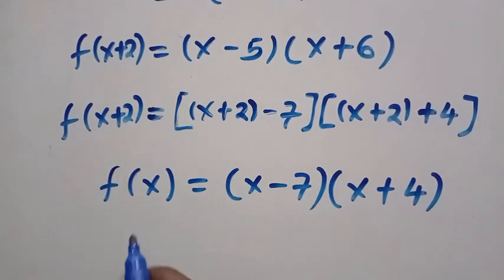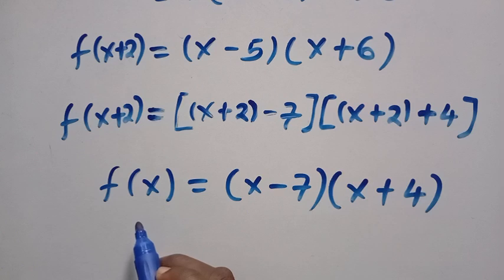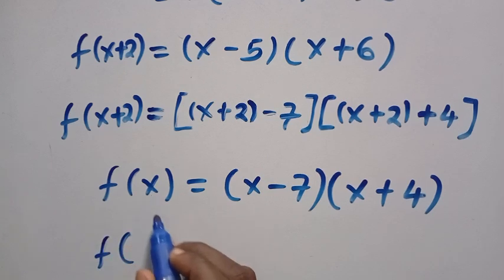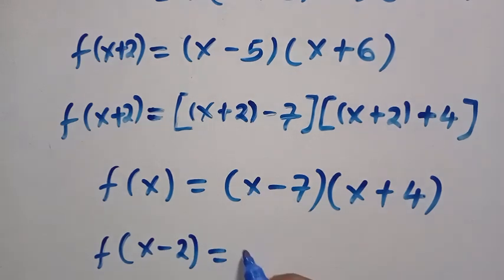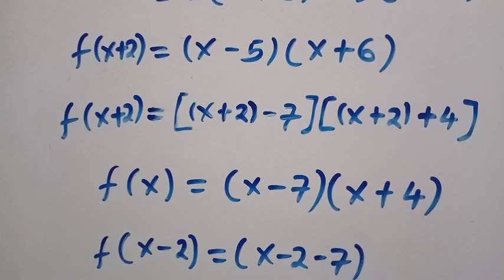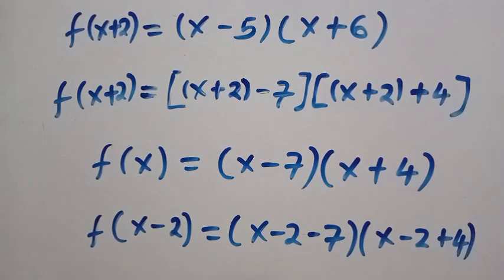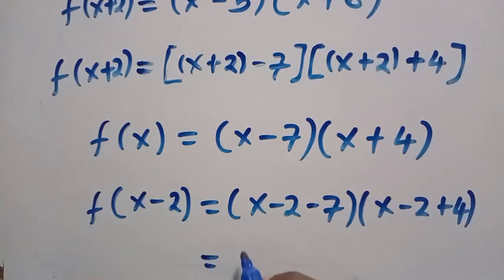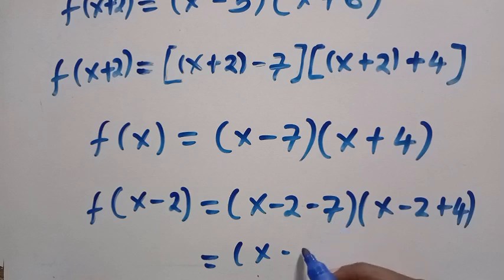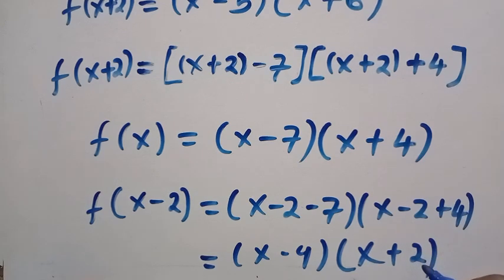Since we have had this, we have to change this x again to x minus 2, because the real problem is find x minus 2. To get x minus 2, we are going to change every x to x minus 2. Therefore, this changes to f(x-2) equals (x here has now changed to x minus 2, then minus 7), and also x plus 4 changes to x minus 2 plus 4. After having this, we have x minus 2 minus 7, that is minus 9, and this is x plus 2.